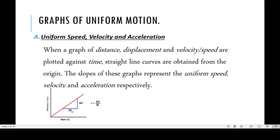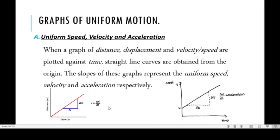The change in vertical over change in horizontal — that is the change in distance over change in time — will give you the speed under a distance-time graph. For a displacement-time graph, if you change distance to displacement, the slope will be change in vertical over change in horizontal, referred to as velocity.